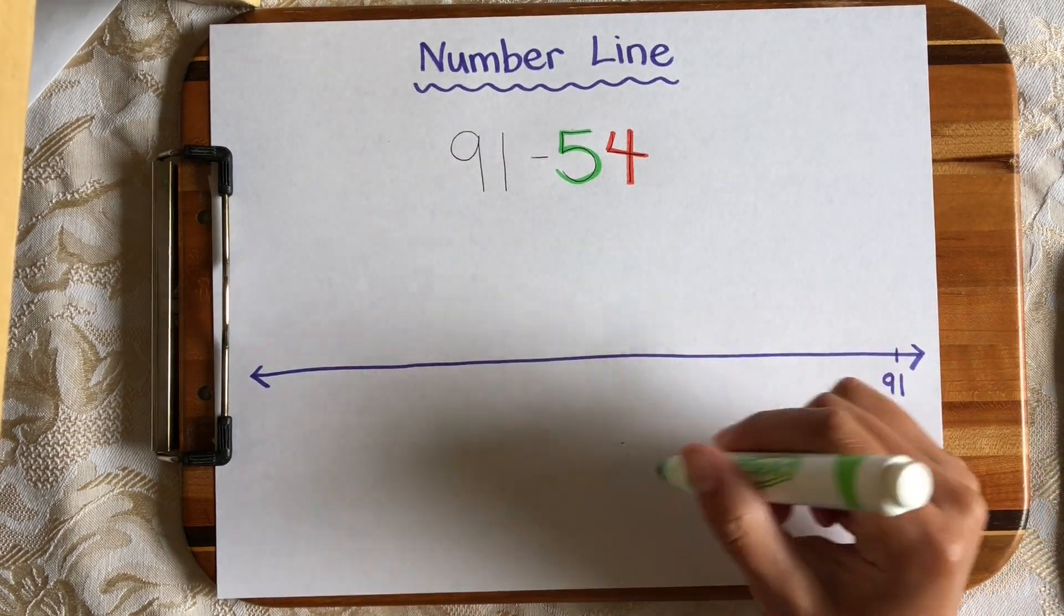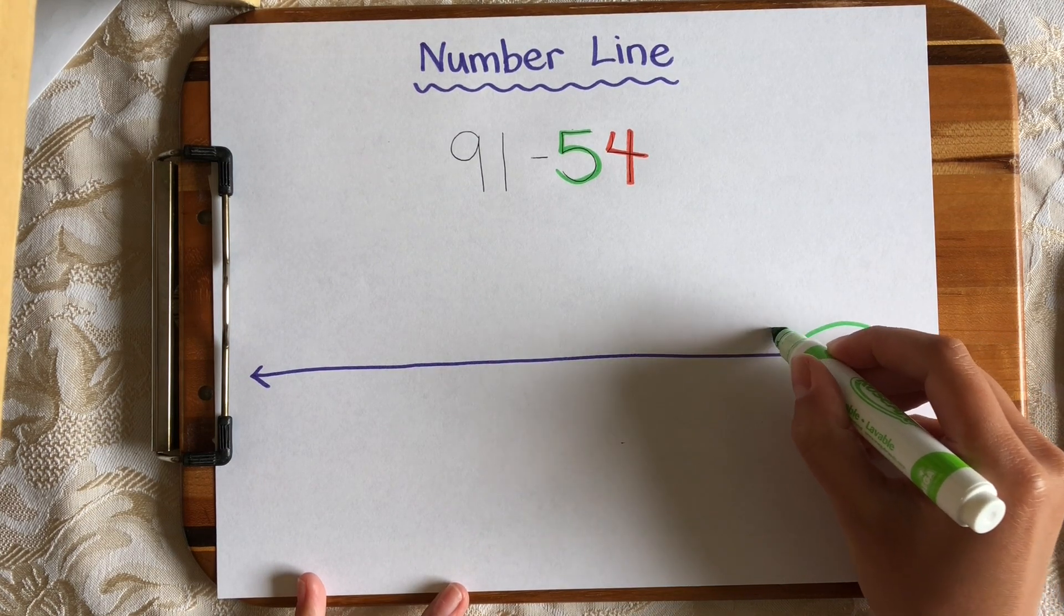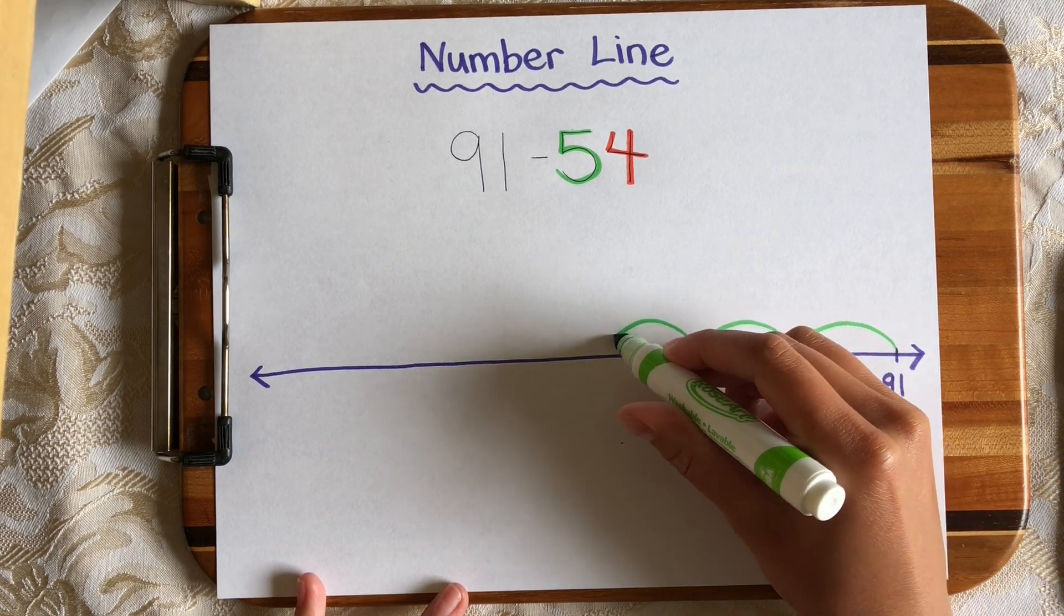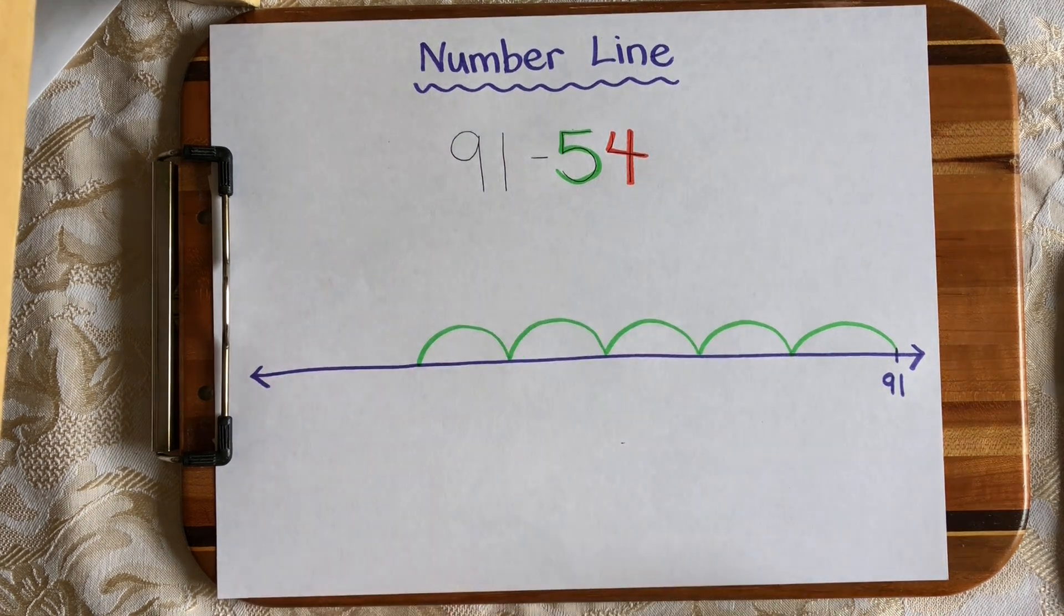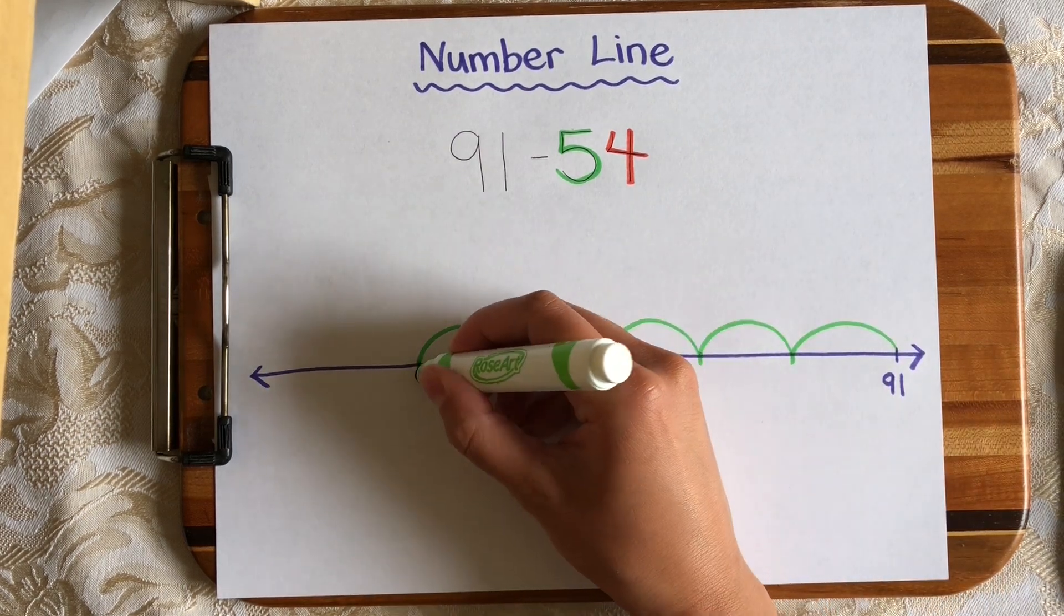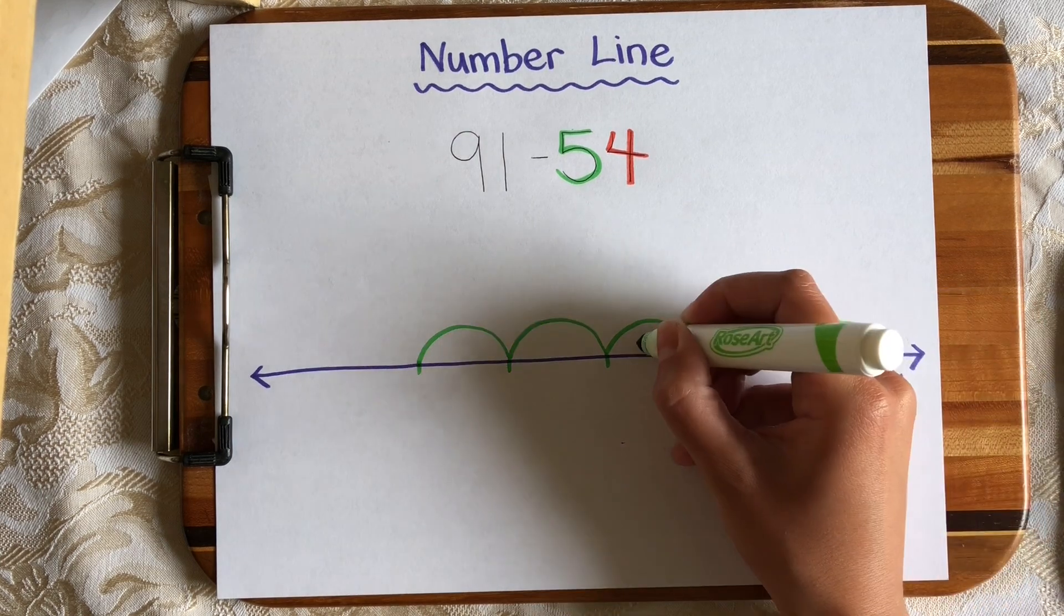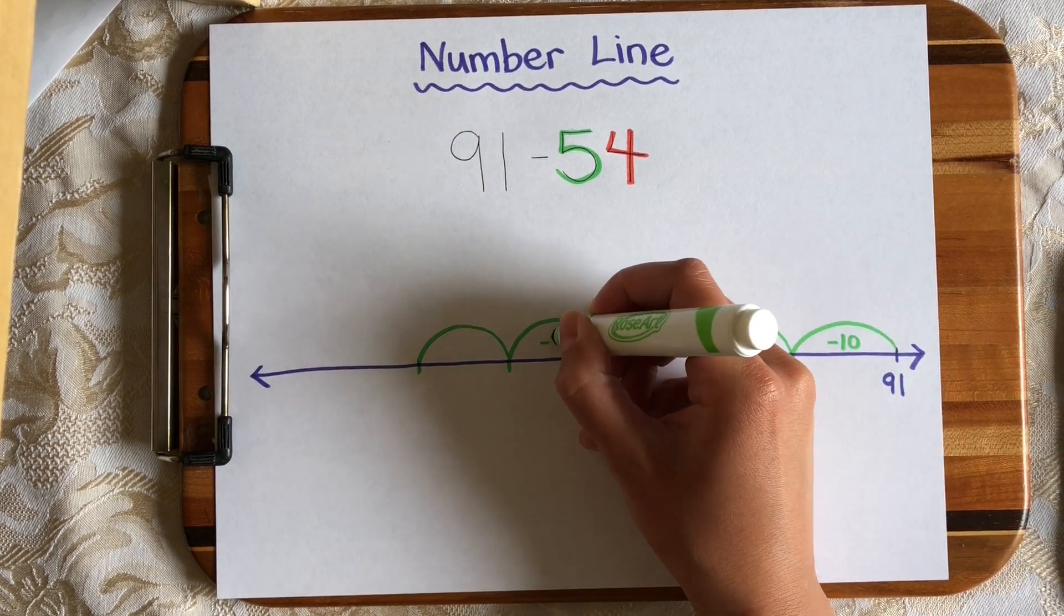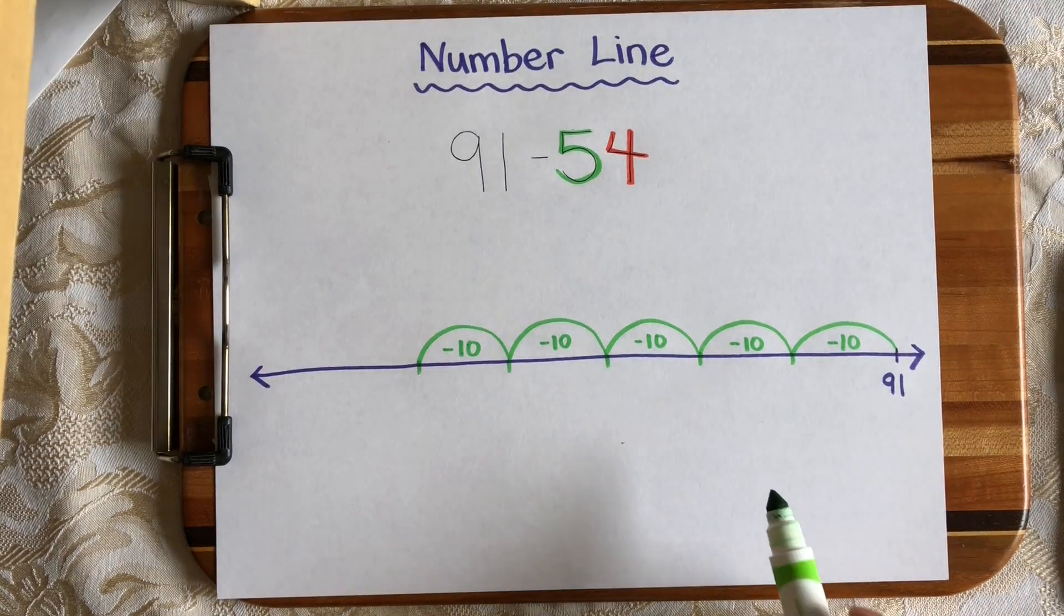And remember we're moving to the left because we are subtracting. So here's 1 hop of 10, 2, 3, 4, 5. And I'm going to label each of those hops with a minus 10 to show that I am subtracting 10 and moving to the left instead of adding and moving to the right. So there are my 5 tens.